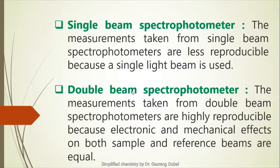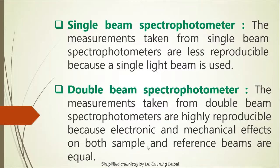The last difference between single beam and double beam spectrophotometer: the single beam gives less reproducible results, meaning not perfectly consistent, while measurements taken from the double beam spectrophotometer are highly reproducible because electronic and mechanical effects on both the sample and reference beams are equal. Therefore, the double beam spectrophotometer is more precise in comparison to the single beam. These are the key differences — thank you for listening.